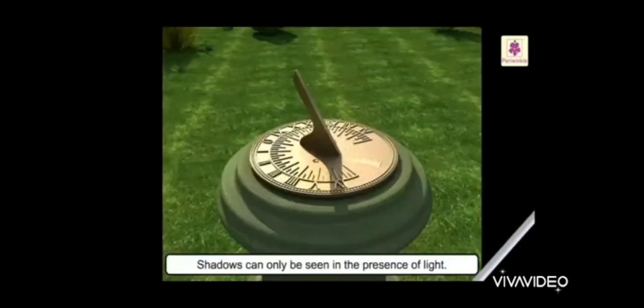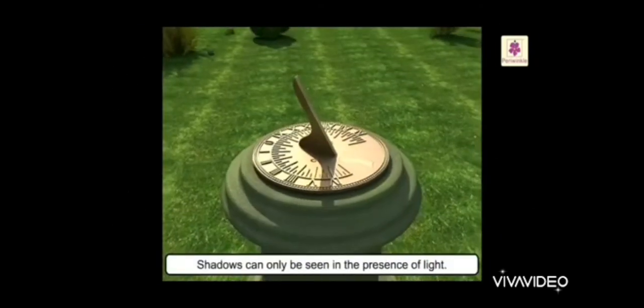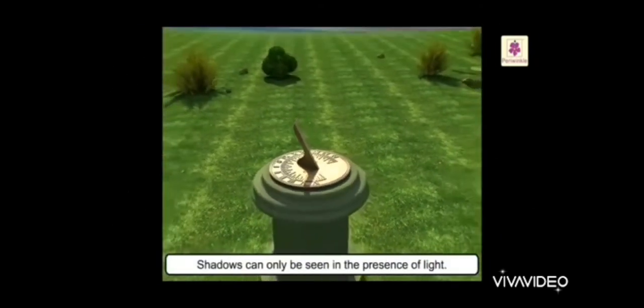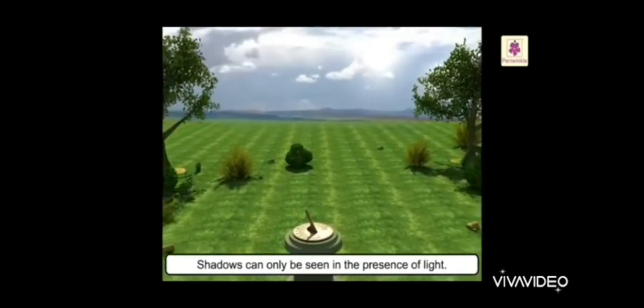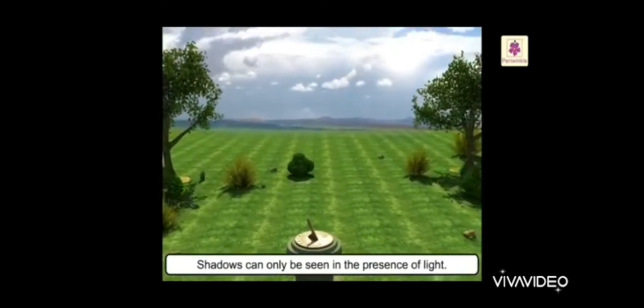You can't see a shadow when the sun is covered by clouds. Shadows can only be seen in the presence of light.